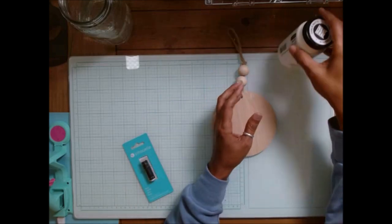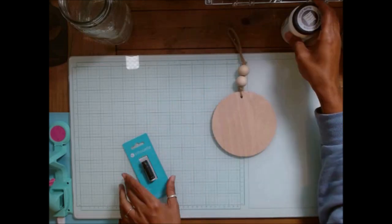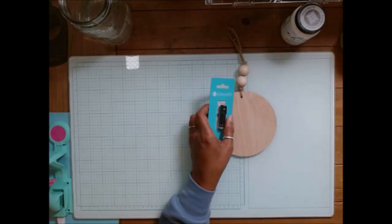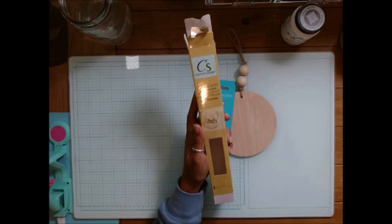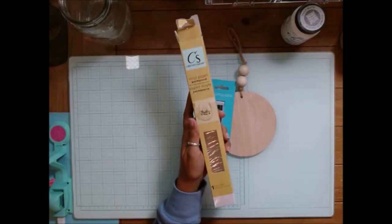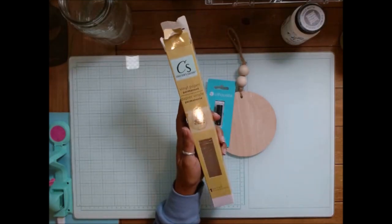I will also be using the Folk Art White chalk paint, and I will be using a Dollar Tree permanent vinyl. This is the first time that I've ever used this brand. So I'm hoping that it will work for this project.